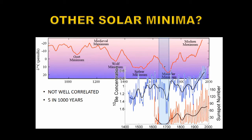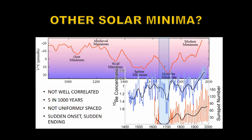We've had five of these minima in the last thousand years, counting the Dalton Minimum, which is an average of about 200 years between each one. But if you look closely, they're not uniformly spaced, so any attempt to claim there's a 200-, 300-, or 400-year period is doomed to failure. Another problem is the sudden onset of the Maunder Minimum — we had a fairly healthy solar maximum just before it.